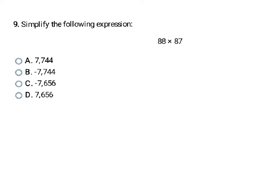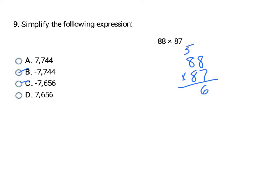Here I have positive 88 times positive 87. Same signs means my answer is going to be positive, so it can't be B or C. I'm going to write it vertically and work it out. Seven times eight is 56, then eight times seven again adding the five gives 61. Move over a space: eight times eight is 64, and eight times eight again adding six gives 70. Adding the two partial products gives me 7,656 as my answer. I already said it had to be positive, so that's D.